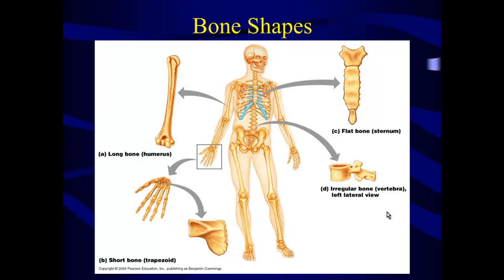So those are the four basic categories of bones. Some people recognize a fifth group called sesamoid or round bones — bones that are often found within tendons or other connective tissues. Your kneecaps are good examples of round bones. All the bones in your body can typically be classified into one of these four — or five — groups, depending on whether you classify sesamoid bones separately.